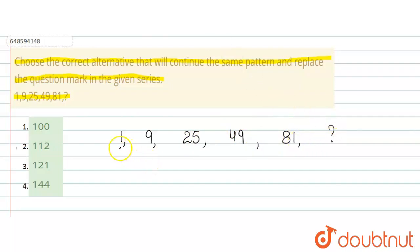Here you see, this is square of 1, this is square of 3, this is square of 5, then this is square of 7, and then this is square of 9.